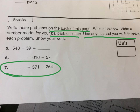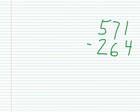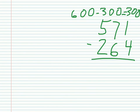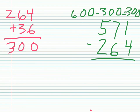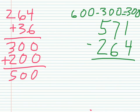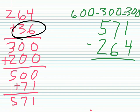I'll do this one with counting up subtraction. I'm going to estimate to the hundreds. Starting at 264 — I'm not going to go to 270, I'm going straight to 300, because I can do that. Next, go to 500. Next, go to 571. Circle them. Take the numbers you added and add them up.